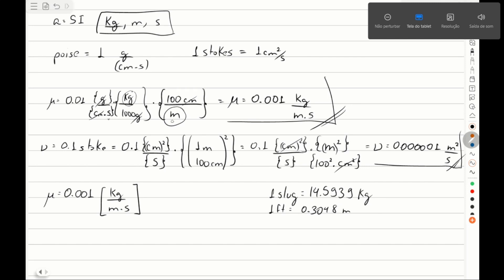In the British system, we need mass in slugs. A slug equals 14.5939 kilograms, and a foot equals 0.3048 meters. So we want to put slugs in place of kilograms.